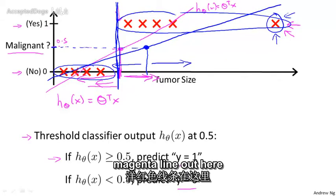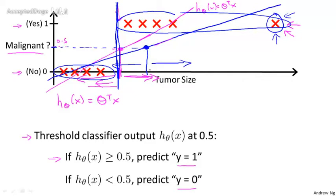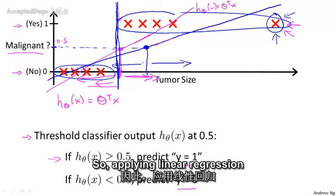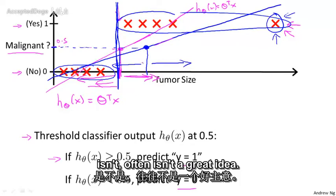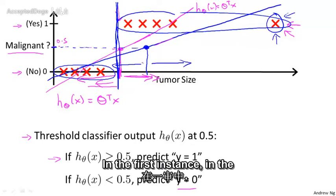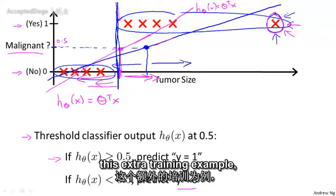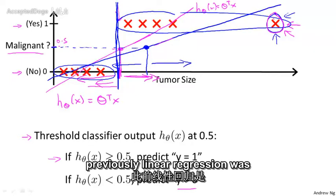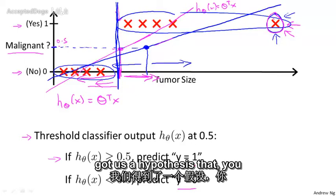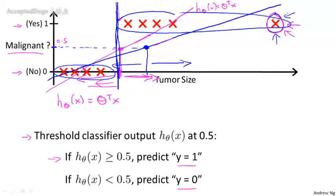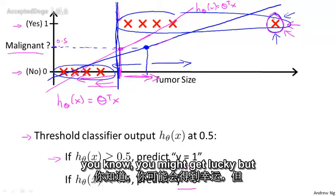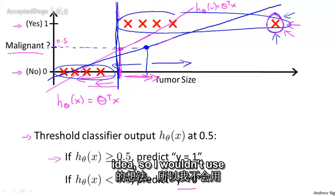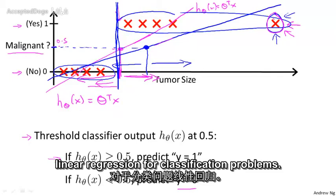But somehow adding that example out there caused linear regression to change a straight line fit to the data from this magenta line to this blue line, and caused it to give us a worse hypothesis. So applying linear regression to a classification problem usually isn't a great idea. In the first example, before I added this extra training example, linear regression was just getting lucky. But usually applying linear regression to a data set, you might get lucky, but often it isn't a good idea. So I wouldn't use linear regression for classification problems.